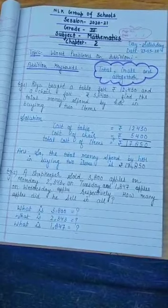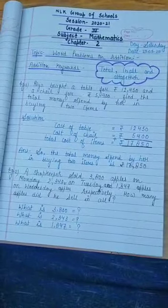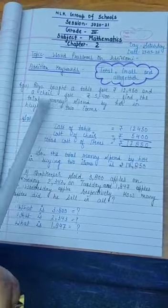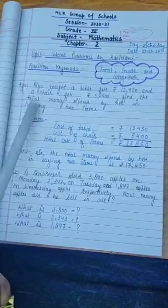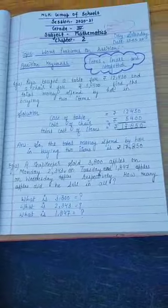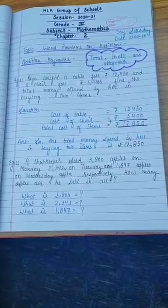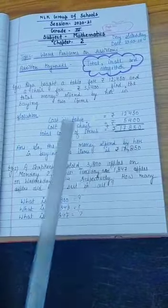Now let's check what is asked in the question. Here it is asked total money, so we add these numbers to get the answer. Let's start.